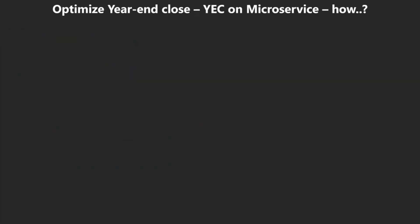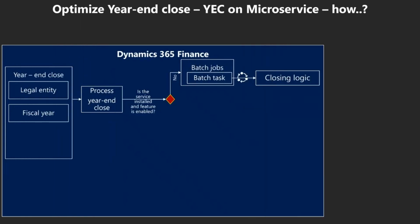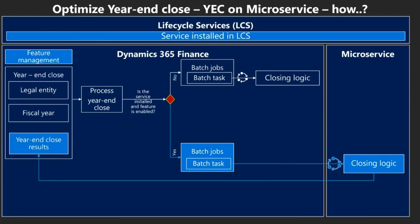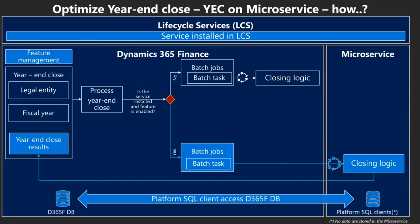How does it work? When you run the year-end close process, the system checks if the optimized year-end close service is installed and the feature management is enabled. If those conditions are not met, the year-end close execution will run as the current design. If those conditions are met, the year-end close execution will be executed on the service, and Dynamics 365 Finance will remain listening to the service and update the year-end close results until the service completes the process.